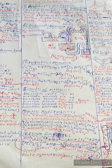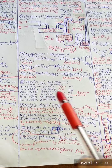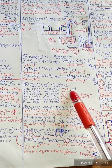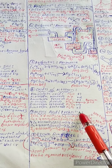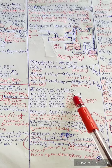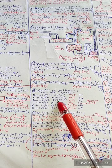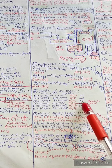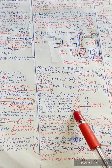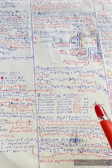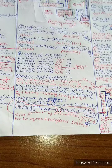Oxides of nitrogen: dinitrogen oxide (N₂O, oxidation state +1), nitrogen monoxide (NO, +2), dinitrogen trioxide (N₂O₃, +3), nitrogen dioxide (NO₂, brown gas, +4), and dinitrogen pentoxide (N₂O₅, +5).